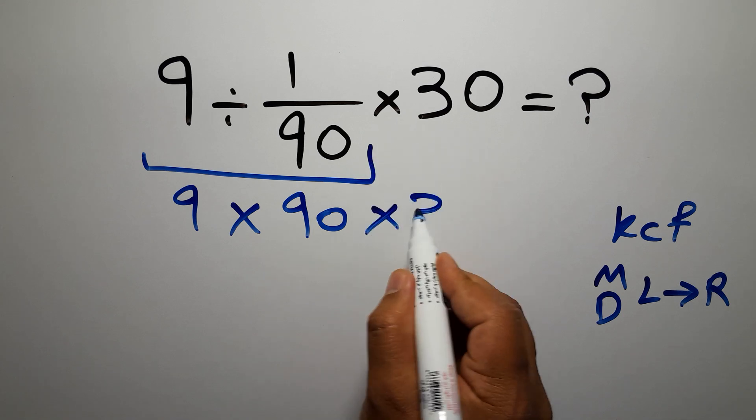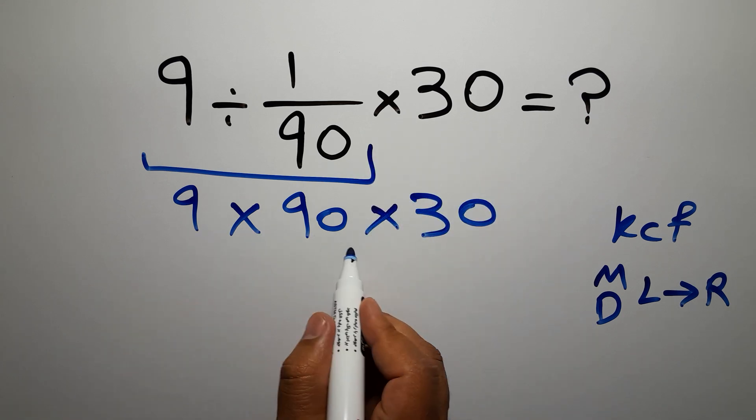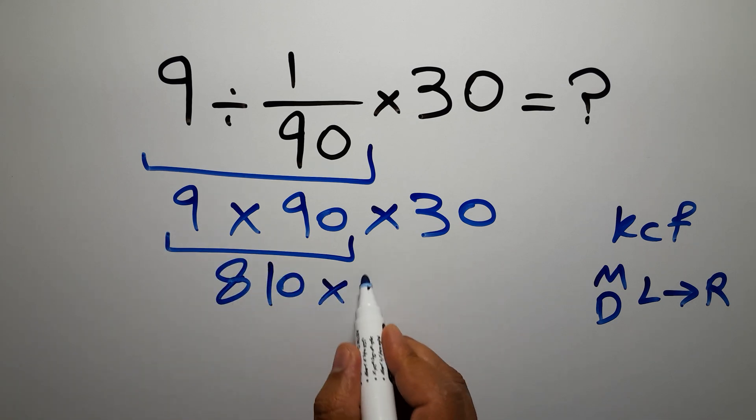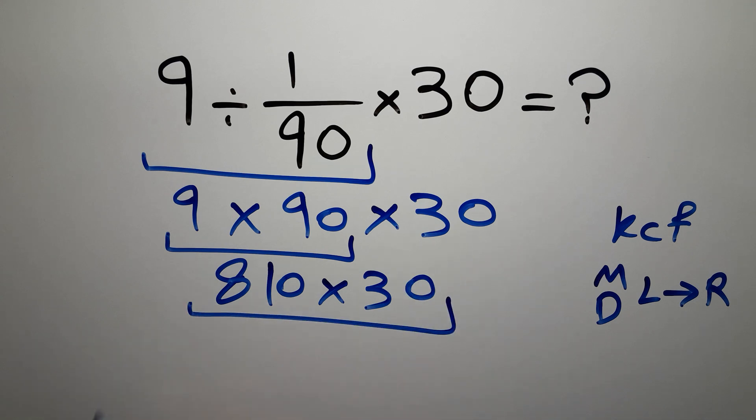9 times 90 gives us 810, and 810 times 30: 3 times 1 gives us 3, and 3 times 8 gives us 24, and here we have two zeros, so our final answer is 24,300. And this is our final answer to this problem.